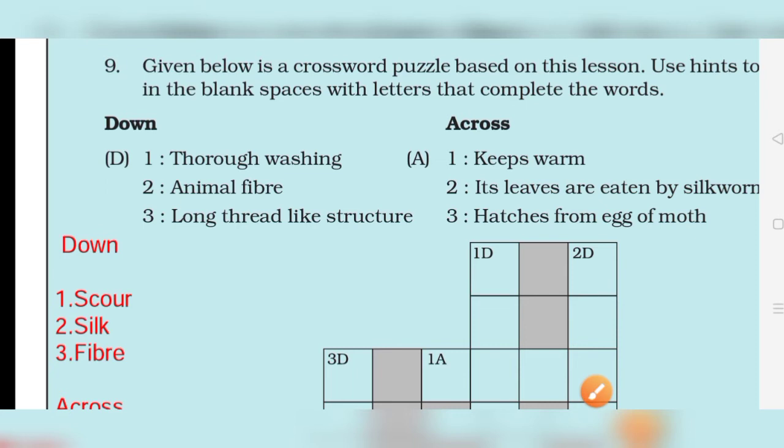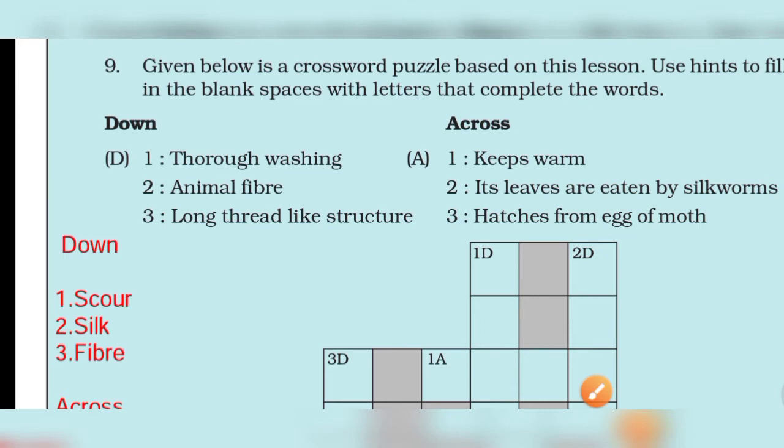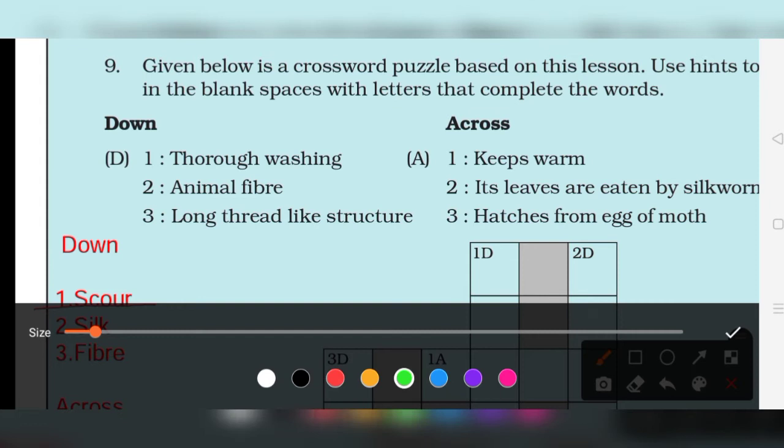Now we have a crossword puzzle. Given below is a crossword puzzle based on this lesson. We will discuss this crossword puzzle. There are some hints given and you have to fill in the blank spaces. Thorough washing is called scoring.